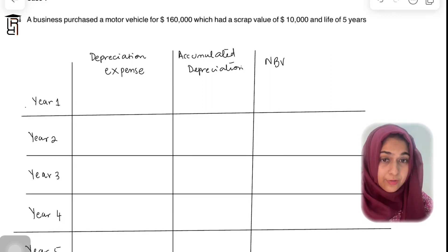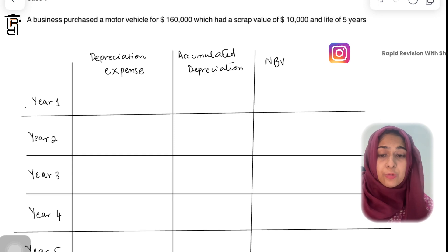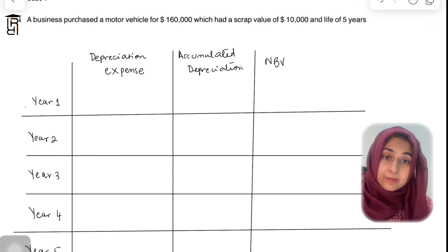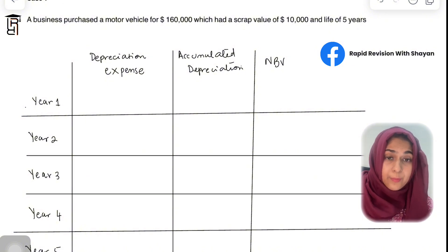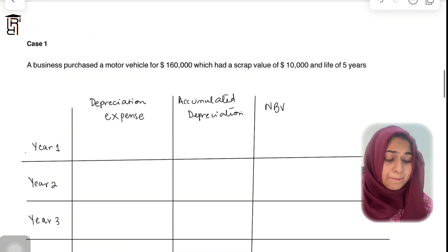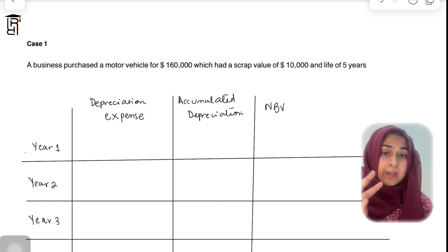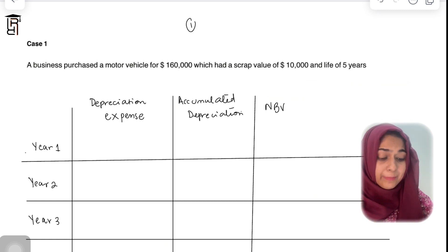Today's video is about the straight-line method of depreciation. It is called straight-line method because every year the depreciation expense stays the same — equal depreciation expense is charged every year against the profits. Straight-line method is also called the equal installment method. There are two very important formulas for this method.